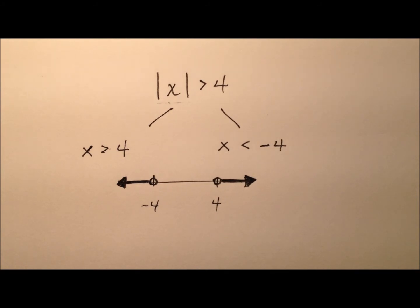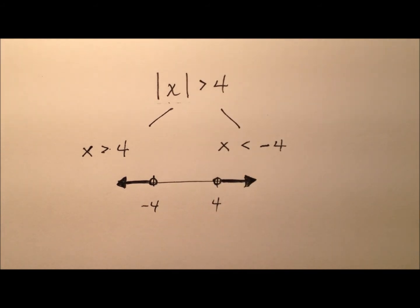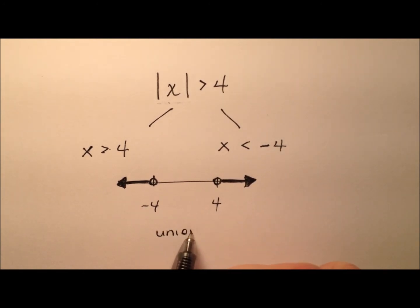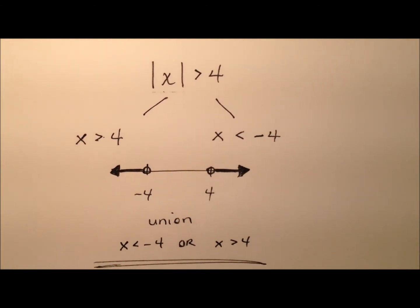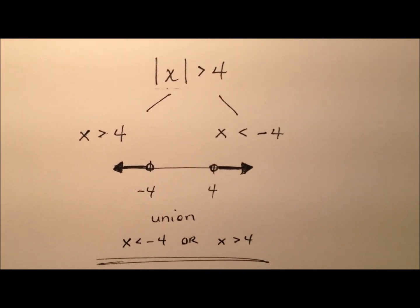As I mentioned earlier, this will resemble unions and intersections if you've solved compound inequalities. We have a compound inequality here, and this is a union. We can write this union as: x is less than negative 4 or x is greater than 4. That summarizes everything we have going here.